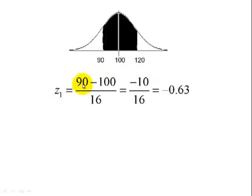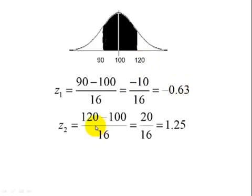The first z-score, 90 minus the mean divided by standard deviation, gives us a z-score of negative 0.63. The second z-score, 120 minus our mean divided by standard deviation, gives us a z-score of 1.25.